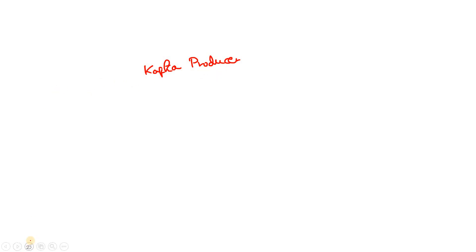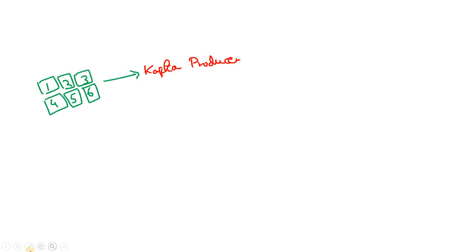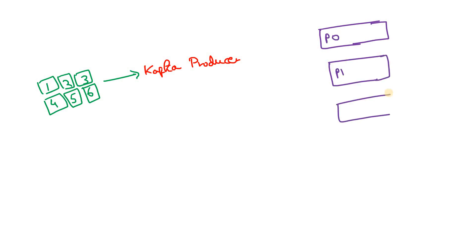The simplest approach: suppose here we have our Kafka producer consuming messages from some real-time source system. The messages are 1, 2, 3, 4, 5, 6. On the right-hand side we have multiple partitions — let's consider we have a total of five partitions: P0, P1, P2, P3, and P4 for the same topic.